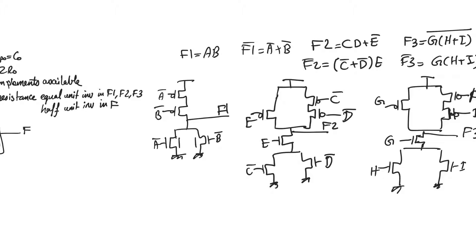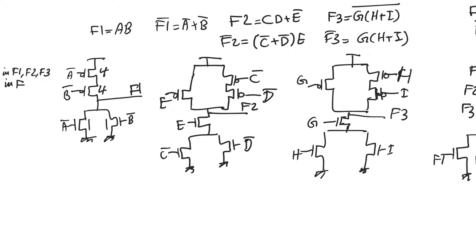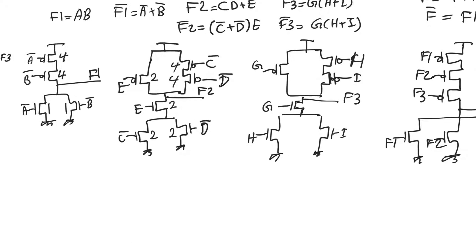In the pull-up network there is only one branch of two series transistors, so size each at four. For f2, a single pull-down branch has two transistors through e and c-bar, so each is sized at two. The branch through e and d-bar means d-bar is also sized at two. In the pull-up network, transistor e is sized at two, while c and d-bar in series are each sized at four.